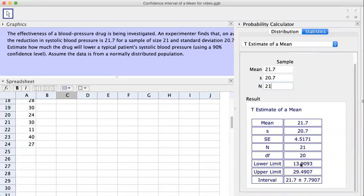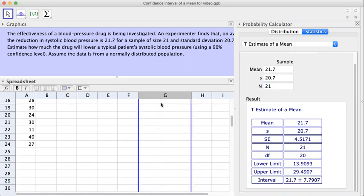After you enter all of this here, hit enter, and you will see below it has the lower limit of 13.9093 and the upper limit is 29.4907. For the answer, you're going to write like this: parentheses and you write lower limit, that would be 13.9093, comma, 29.4907. That's how you type the confidence interval.